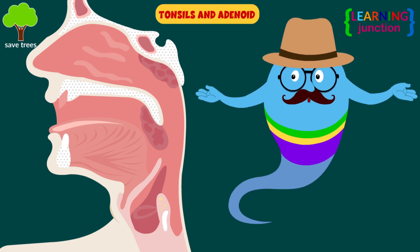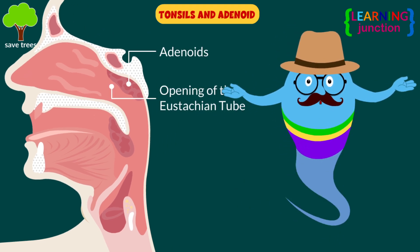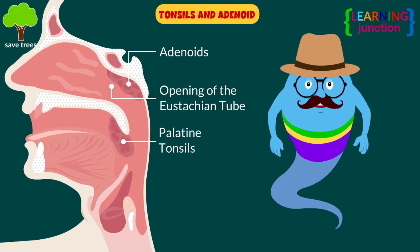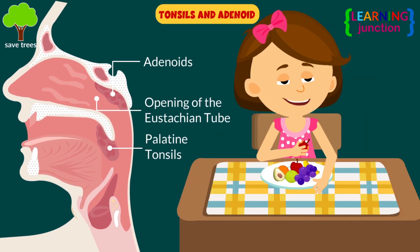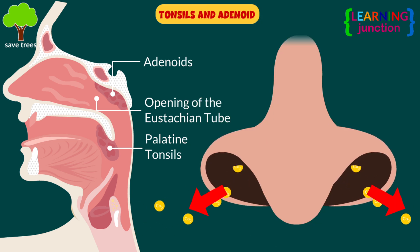Tonsils and adenoid: these lymphoid organs trap pathogens from the food you eat and the air you breathe.